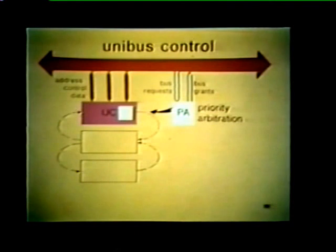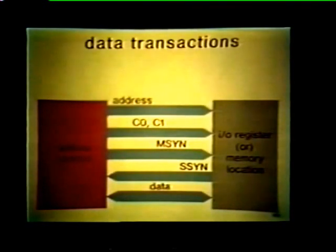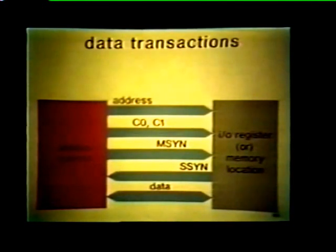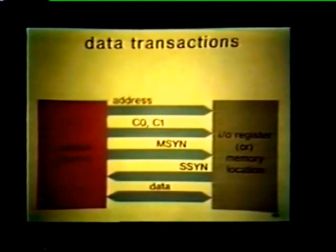Let's see how the unibus control functions during a typical data transaction. The unibus control selects a slave device by placing its address on the bus and specifies the type of data transfer by asserting or clearing the C0 and C1 lines. It also generates a master sync, or MSYN signal, to tell the device that it wants to send or receive data. The slave device acknowledges with a slave sync, or SSYN signal, and during this interlock dialogue, data is either strobed into the unibus control or transferred out to the slave device.